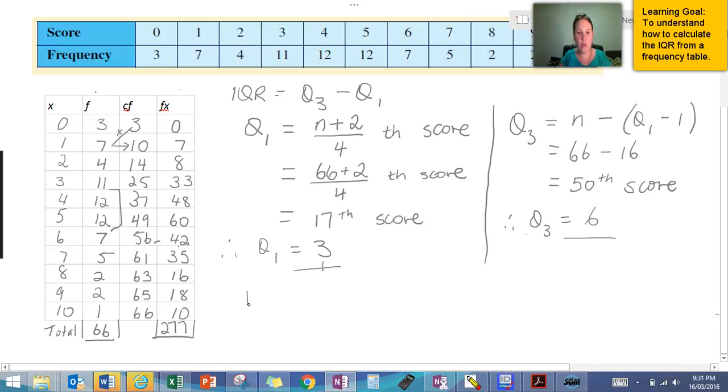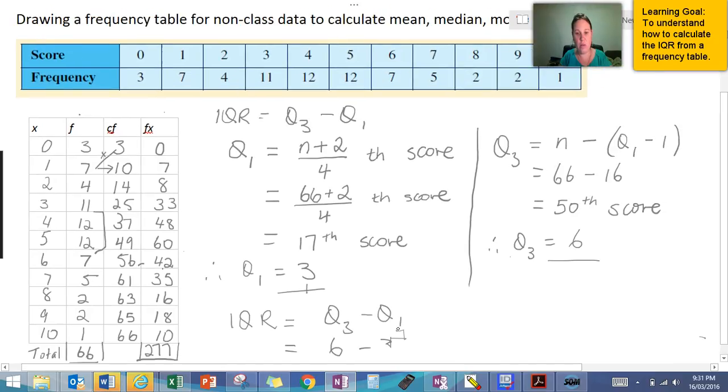Now we use our interquartile range formula, IQR equals Q3 minus Q1, which is going to be equal to 6 minus 3.